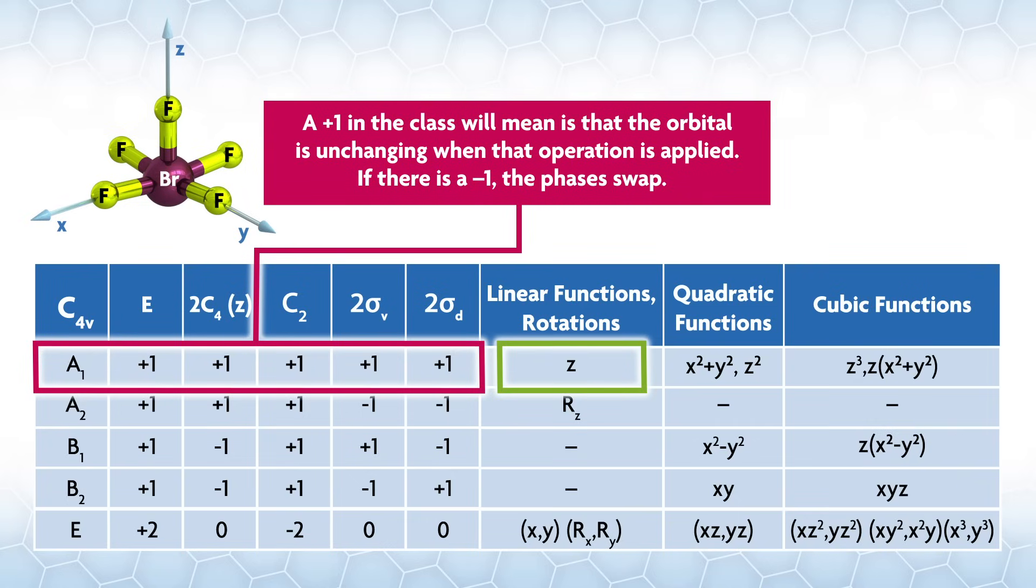If you look at what happens when you do a C4, C2 along z, sigma v, and sigma d on the pz orbital, the phase doesn't change and the orbital is unmoved. So plus one is given across all of these classes and pz is in the A1.